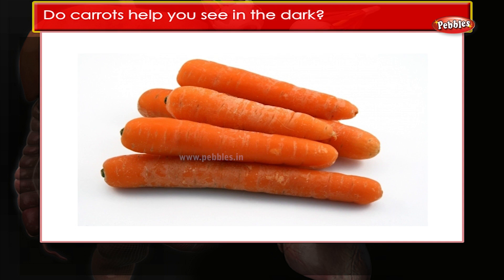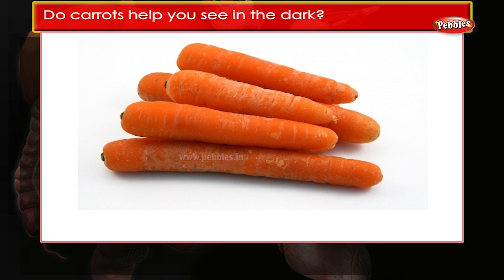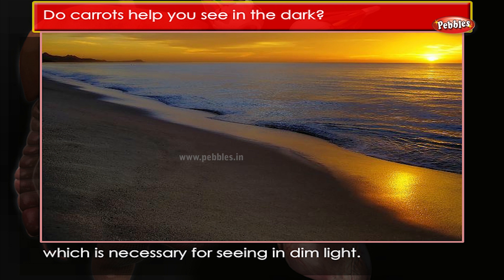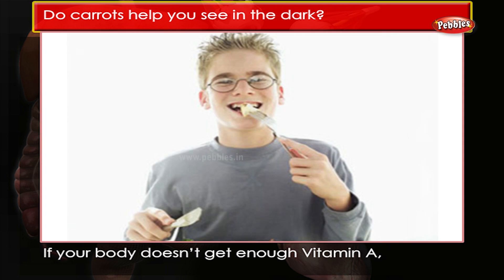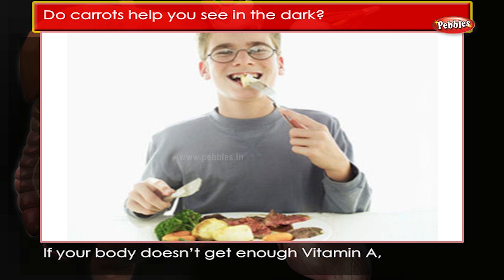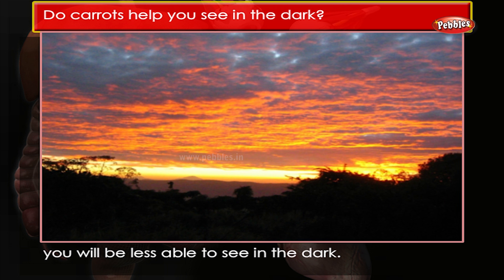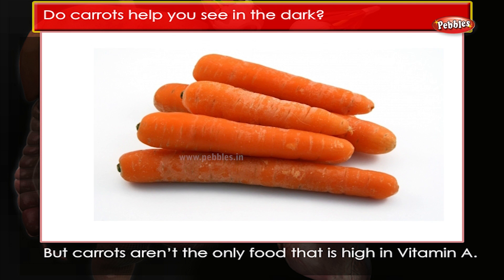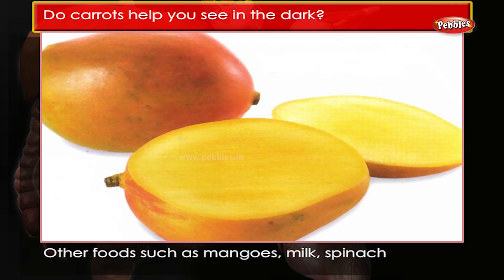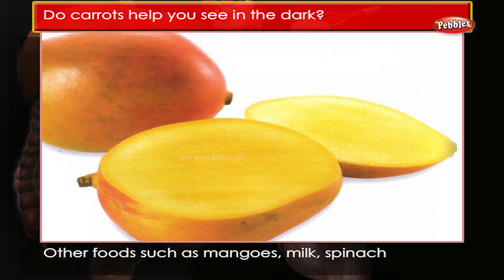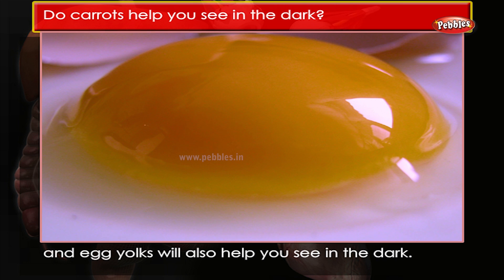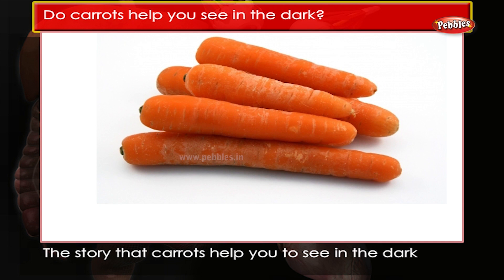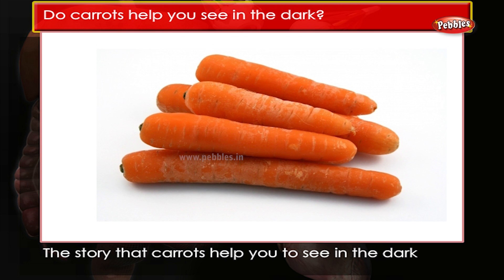Do carrots help you see in the dark? Carrots are rich in vitamin A, which is necessary for seeing in dim light. If your body doesn't get enough vitamin A, you will be less able to see in the dark. But carrots aren't the only food high in vitamin A — other foods such as mangoes, milk, spinach, and egg yolks will also help you see in the dark.